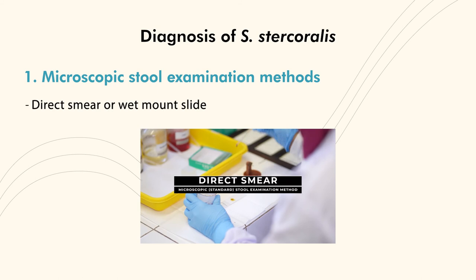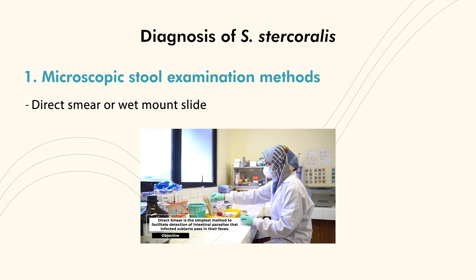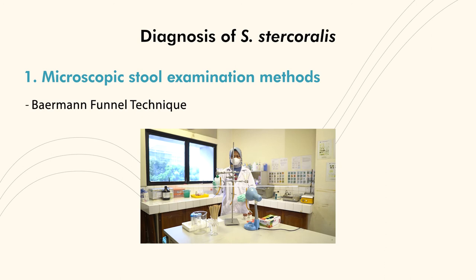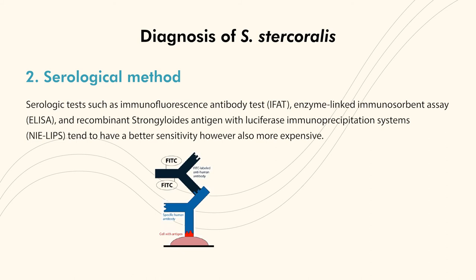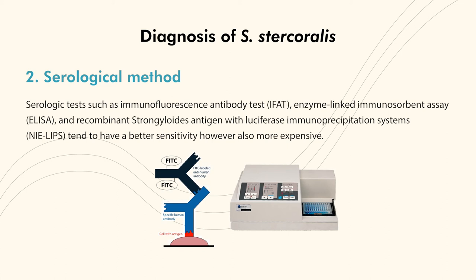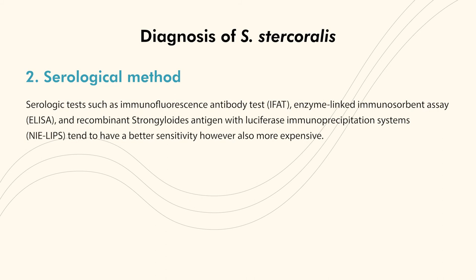The Direct Smear has less sensitivity compared to the Baermann Funnel Technique or Koga Agar Culture. Serological methods such as the Immunofluorescent Antibody Test (IFAT), Enzyme-linked Immunosorbent Assay (ELISA), and Recombinant Strongyloides Antigen with Luciferase Immunoprecipitation System (LIPS) tend to have better sensitivity, however they are also more expensive.